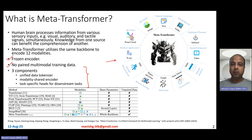Meta Transformer has three main components. First, there is a unified data tokenizer so you can take data from any modality and tokenize it into a unified format. Second, a modality-shared encoder — all modalities share the same encoder. Third, there are task-specific heads for downstream tasks, enabling the model to be used for various kinds of tasks.